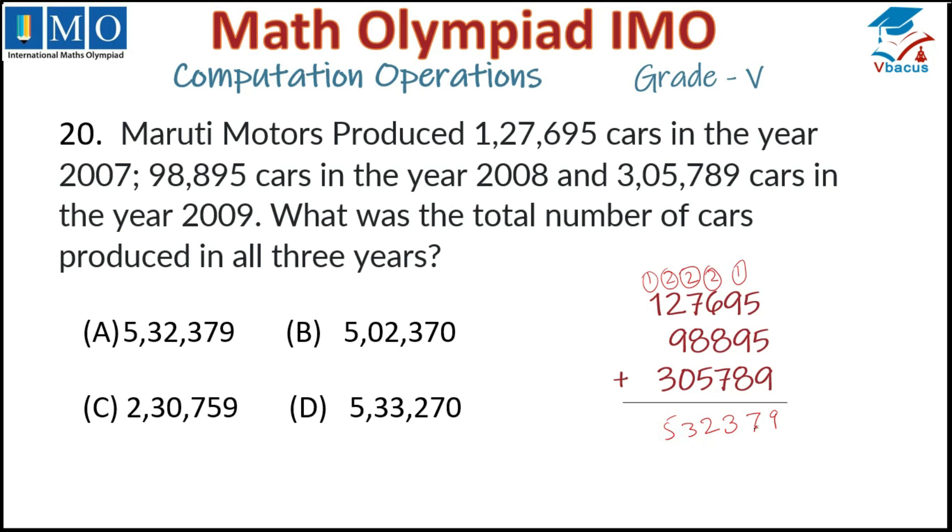So 5,32,379. Where is that option? That is option A. Your option A is correct.